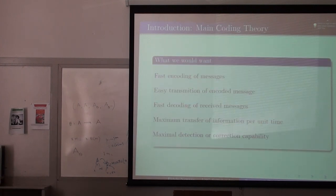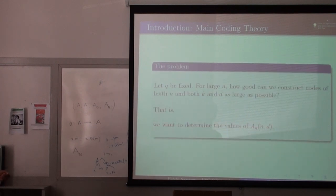In general, what do you want? As far as coding theory is concerned, you want to be able to encode your messages fast. You want to also easily transmit them fast, detect errors and correct them. Those are things which you want to do. Here is the problem. The question you really ask yourself, as far as the main coding theory problem is concerned, is: given a fixed Q and n, how good can you really construct codes so that all those parameters are carefully chosen? It's not always easy.